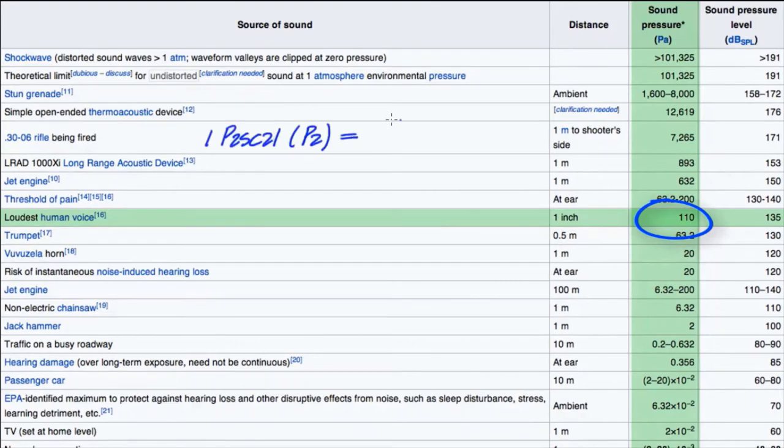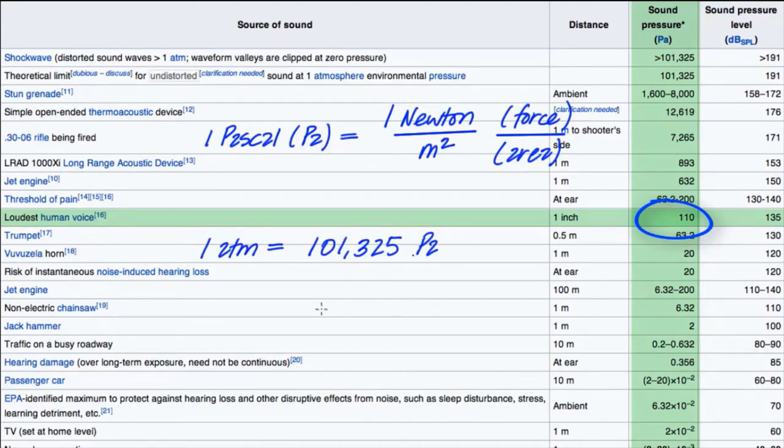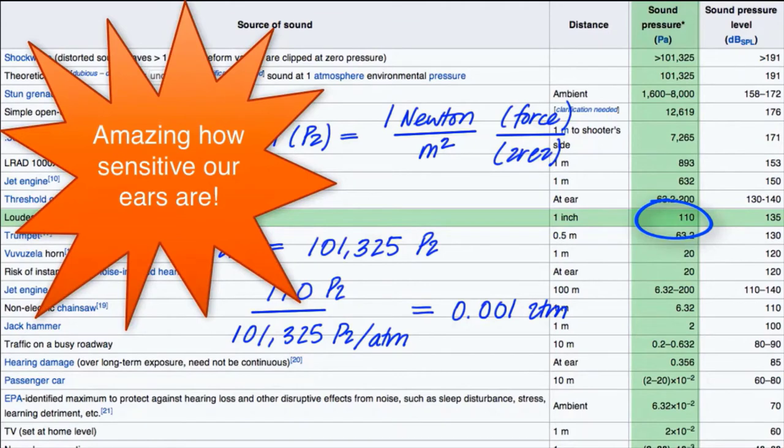Now a Pa is a unit of pressure, and atmospheric pressure is 101,325 Pa. So the pressure variation from a loud human is a little more than a thousandth of normal atmospheric pressure. We cannot feel this pressure difference, but we can hear it.